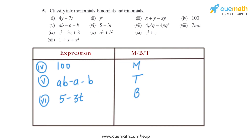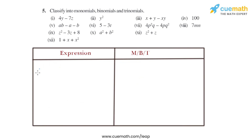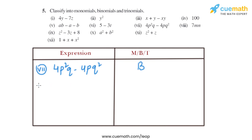In the seventh part, the expression given is 4p square q minus 4pq square. As we can see, there are two different terms, so that is basically a binomial. In the eighth part, 7mn is given. As we can see, there is only a single term, 7mn, so that is a monomial.